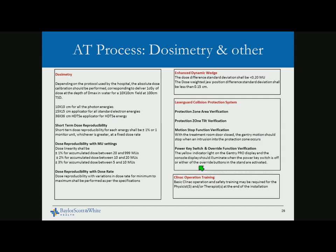After beam performance testing, there are dosimetry tests: MU linearity, dose reproducibility, and dose rate consistency all need to be done with a backup chamber and end-effect verification. Enhanced dynamic wedge testing is a functional test — there is no dosimetric or quantitative test during acceptance testing, only a functional check of jaw motion. Laser guard collision protection systems, included in most LINACs, are important to check though some sites choose to disable them.